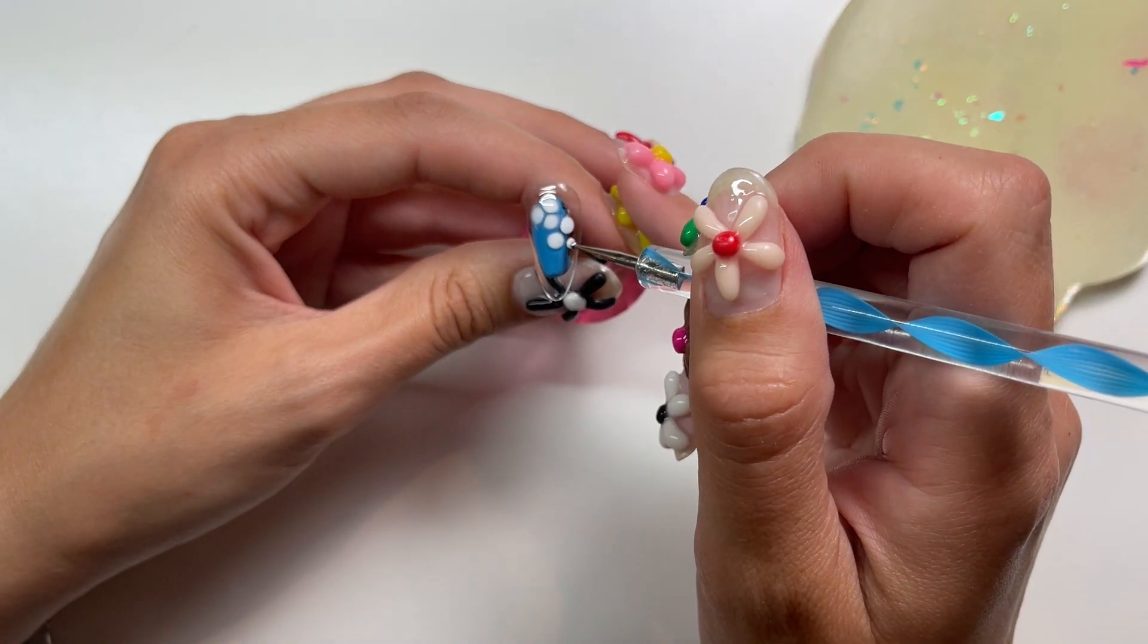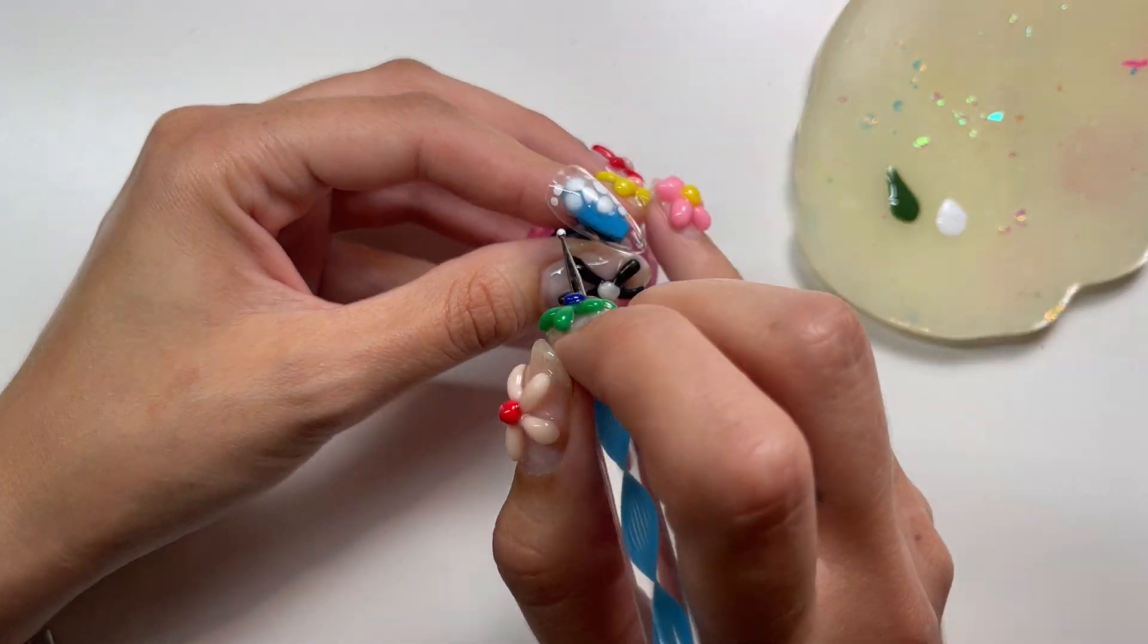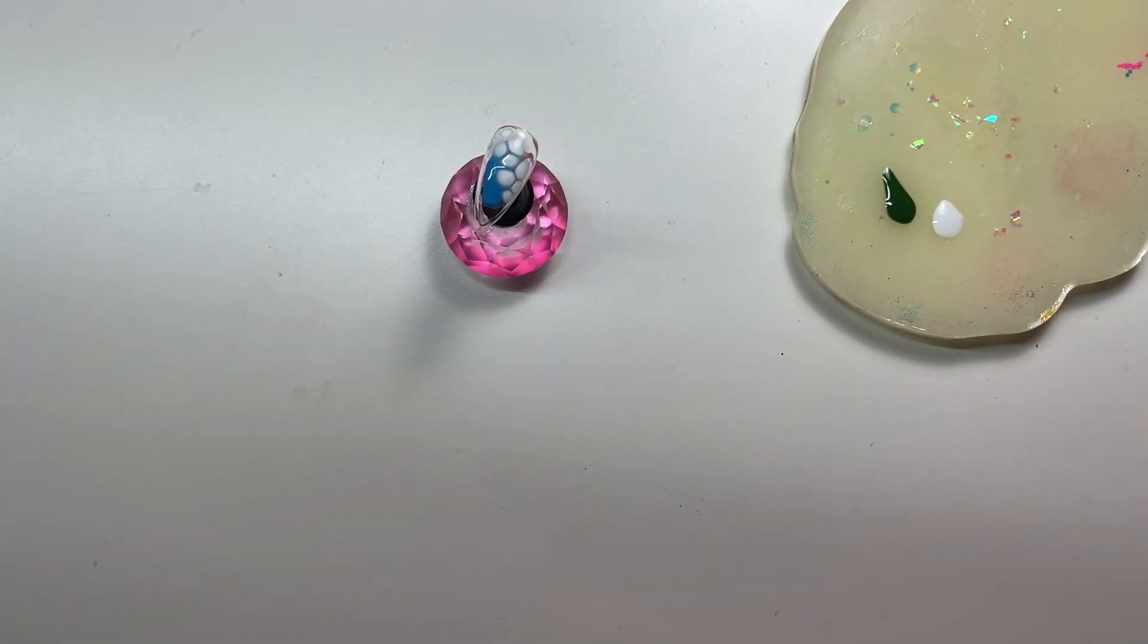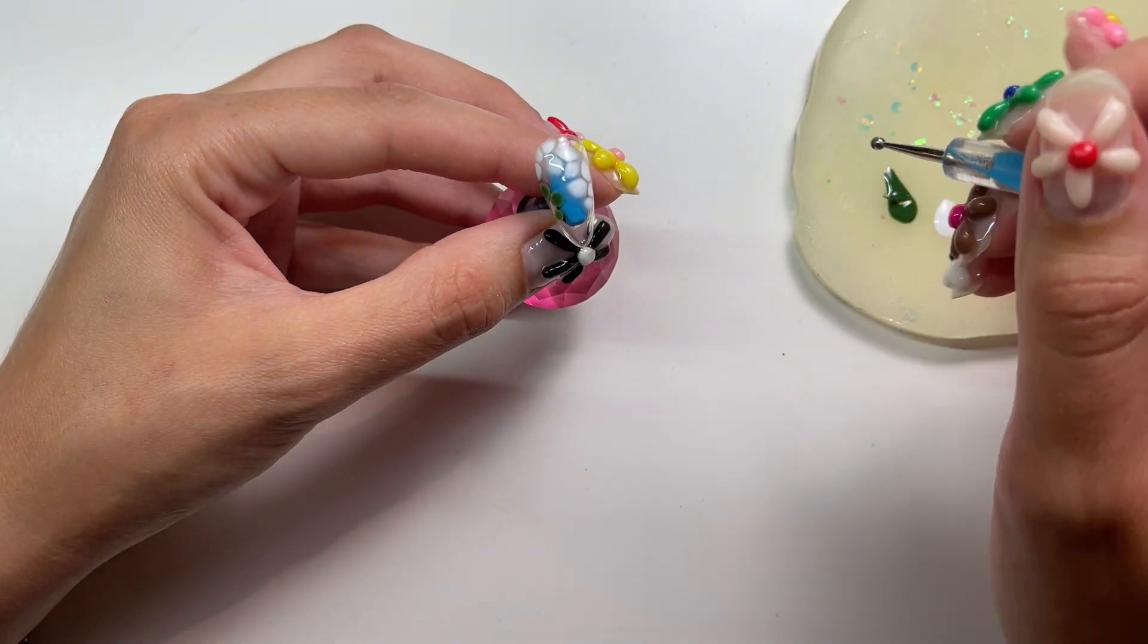So I'm just using my dotting tool and I'm going in and creating a snakeskin pattern. First by starting with the white and running it on an angle down the center of the nail, and then I'm going to swap out and go for the green, filling in all the empty spots.